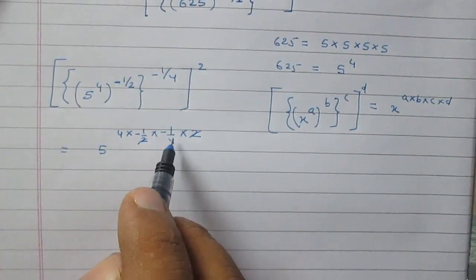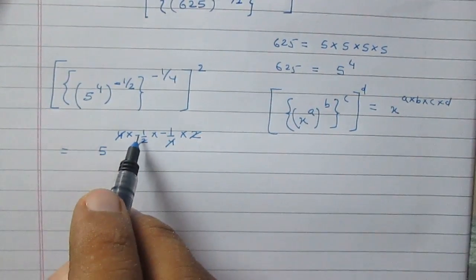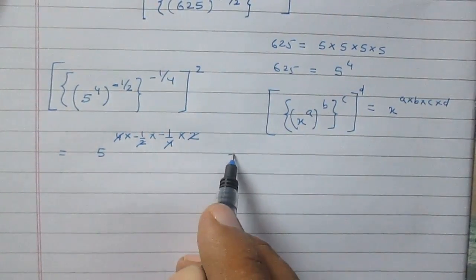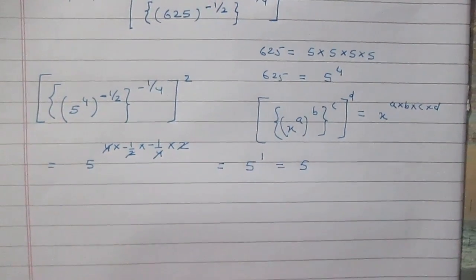The 2s can be cancelled, 4 is cancelled by 4, and minus 1 in multiplication with minus 1 gives plus 1. So finally we get 5 raised to power 1, which is 5 itself.